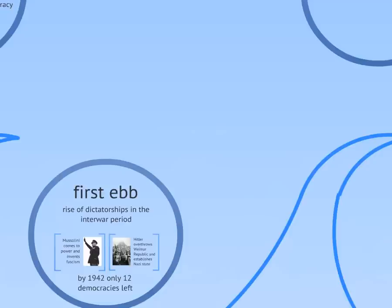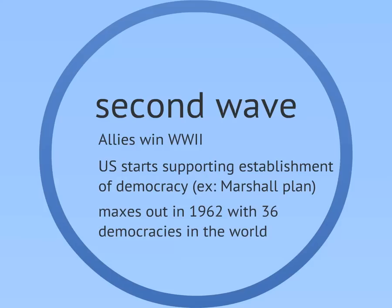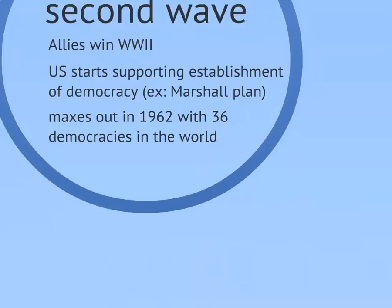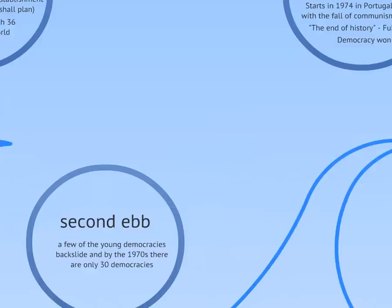The second wave started in the wake of World War II with the Allies' victory. The U.S. and its allies supported the establishment of democratic regimes in the former Axis powers with programs like the Marshall Plan. Such programs helped account for the successful democratization of Japan, West Germany, and Italy. India also democratized in the second wave, as did a number of other newly independent former colonies, and by 1962 there were 36 democracies in the world. But this was followed by another ebb, as many of those former colonies fell back into authoritarian government, though India remains a notable exception.